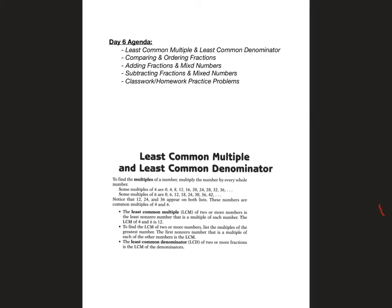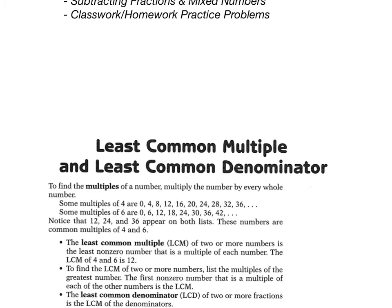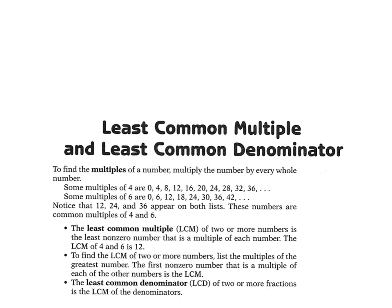We're going to start with Least Common Multiple and Least Common Denominator. The multiples of a number are found by multiplying the number by every whole number. Some multiples of 4 are 0, 4, 8, 12, 16, 20, 24, 28, 32, 36, and so on. Some multiples of 6 are 0, 6, 12, 18, 24, 30, 36, 42. Notice that 12, 24, and 36 appear on both lists — these numbers are common multiples of 4 and 6. The least of those is your Least Common Multiple. If they were denominators of a fraction, it would be called the Least Common Denominator.